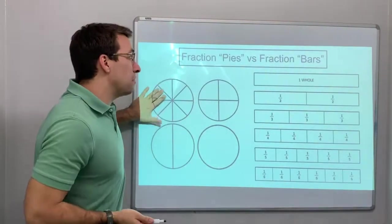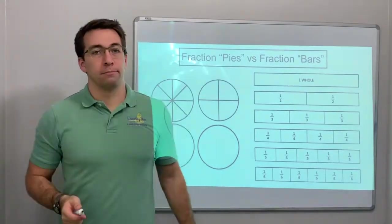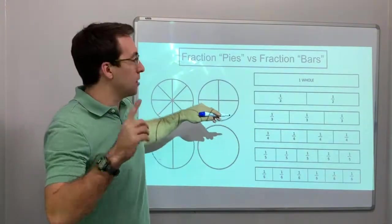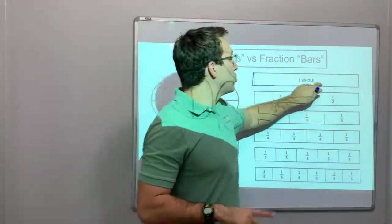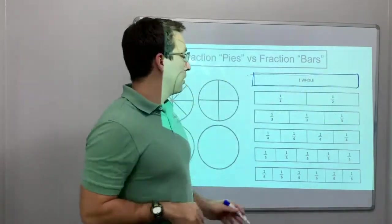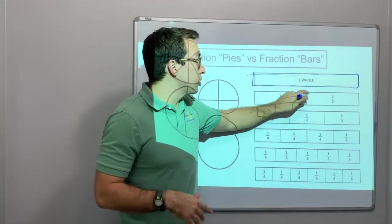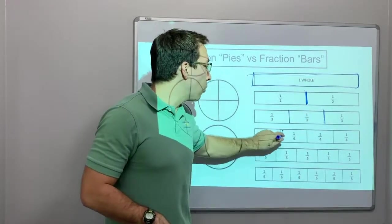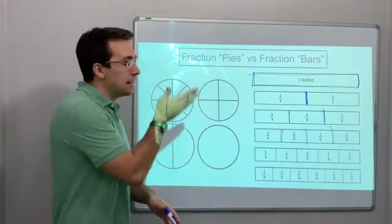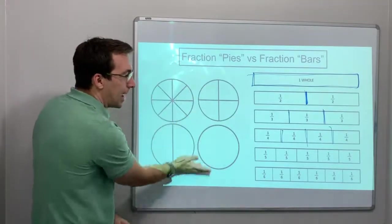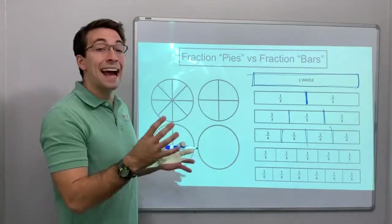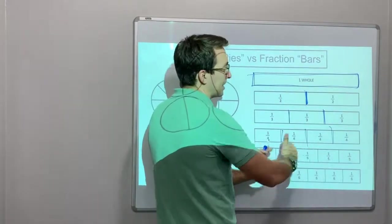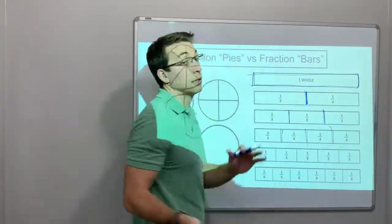So fraction pies versus fraction bars. If you have a fraction bar, and we talked about this in the first video, this is one whole. Okay. So you're going to have one whole equals two halves, or it equals three thirds or fourths. If you have a stack of fraction bars, you can add them together. You can look at them and you can think, if they're added together and they equal the full box, that's one whole.